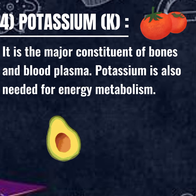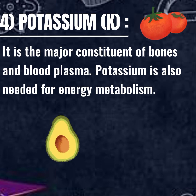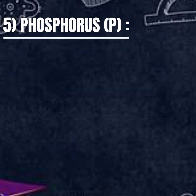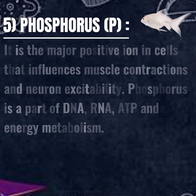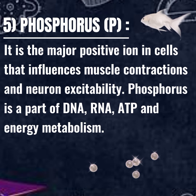Potassium: it is the major constituent of bones and blood plasma. Potassium is also needed for energy metabolism. Phosphorus: it is the major positive ion in cells that influences muscle contractions and neuron excitability.